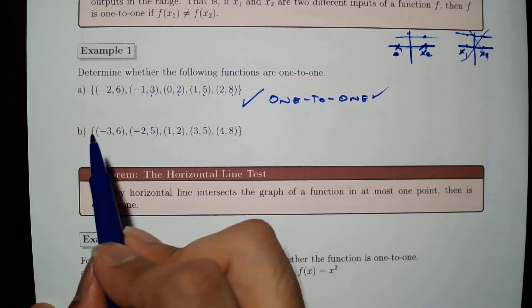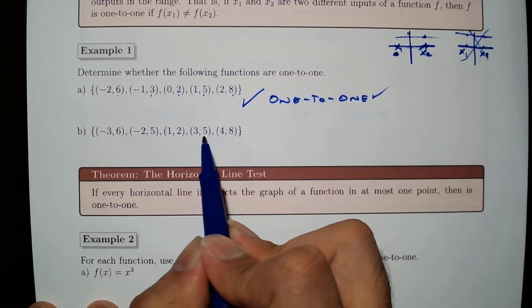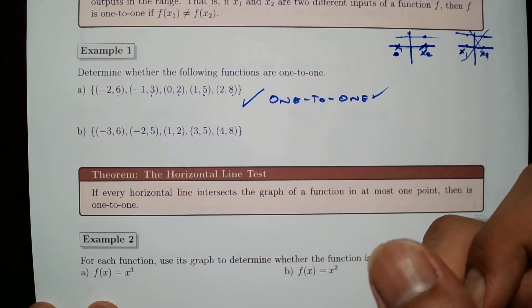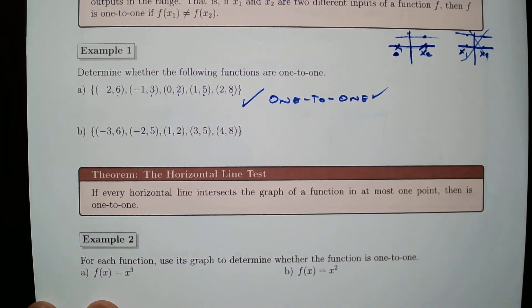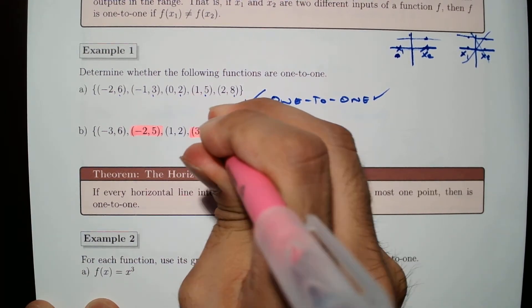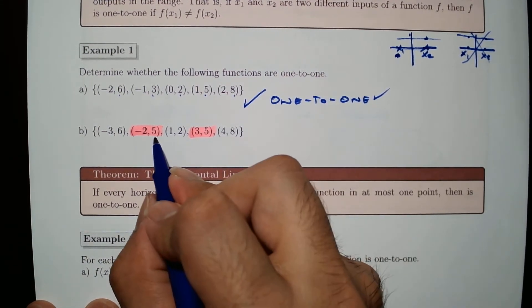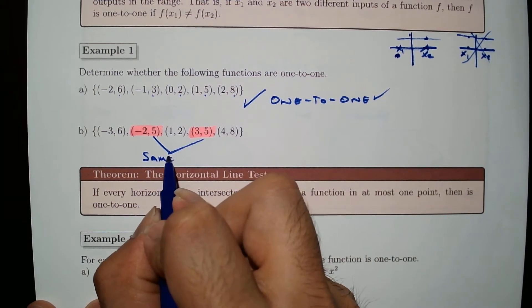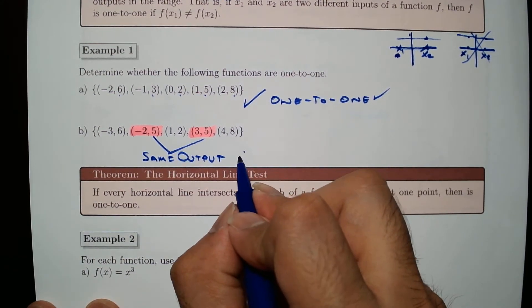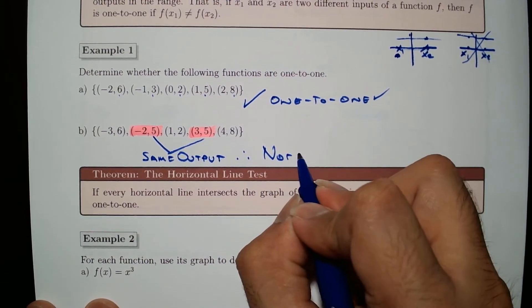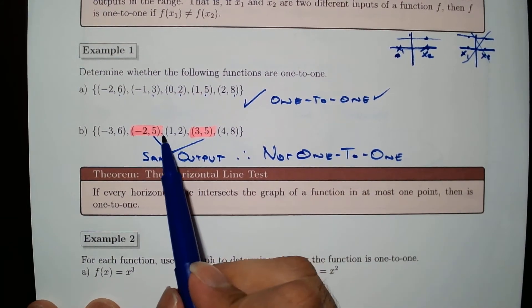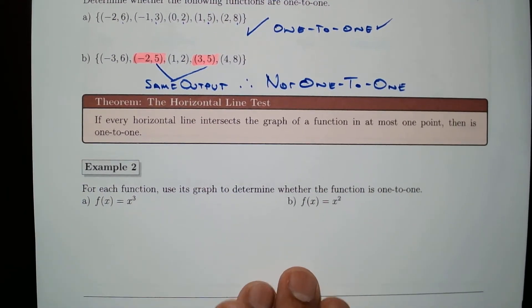Now let's look at part B. Observing the x-values confirms it is a function. However, checking whether it is one-to-one, we observe that the 2nd and 4th ordered pairs both have the same output. The function is a function, but it is not one-to-one, because it has the same y-value for different inputs.